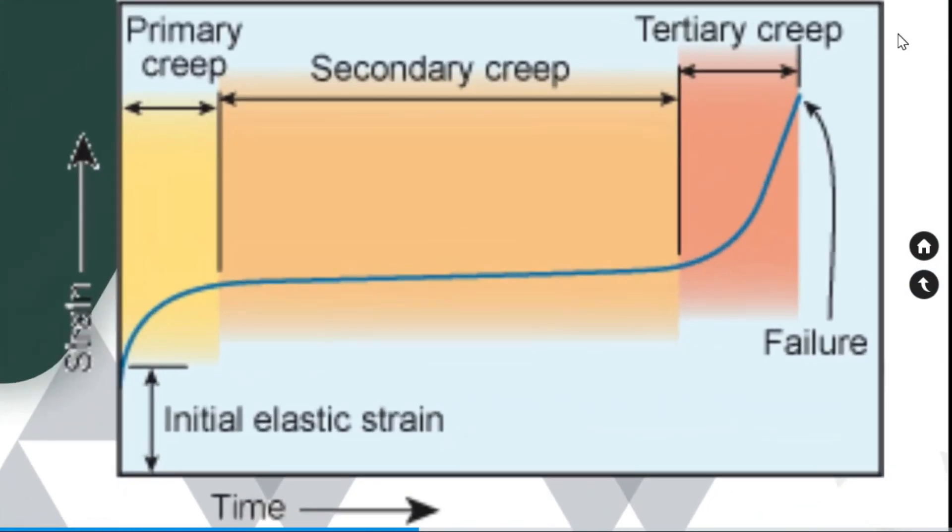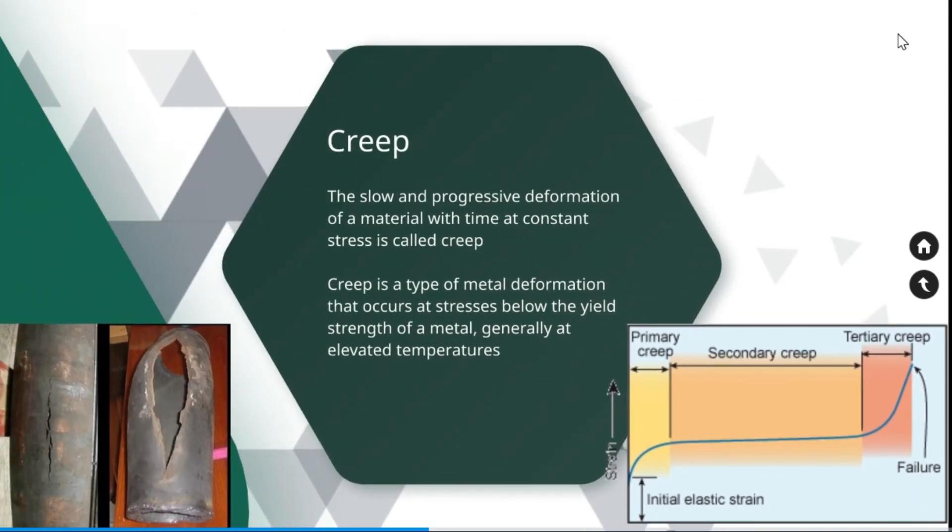This image shows how creep start and end with a failure. Creep can happen in three stages: the primary creep, secondary creep and tertiary creep and end up with a failure. Secondary creep will undergo a large duration compared to the primary creep and tertiary creep.